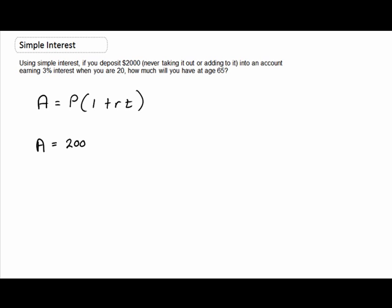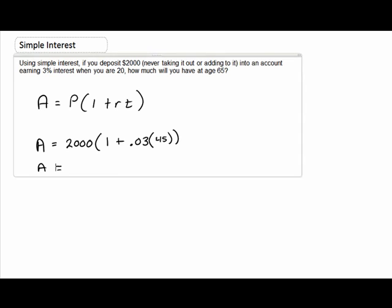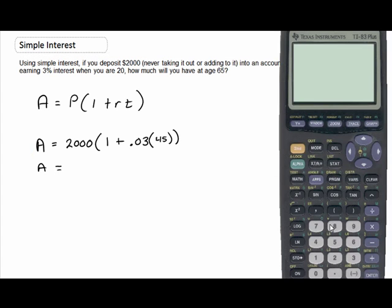That's the $2000. One plus my rate, 0.03—remember, turn your percents into decimals. Age 20 to 65, that's 45 years. And so my amount would be... turn it on, so we have...